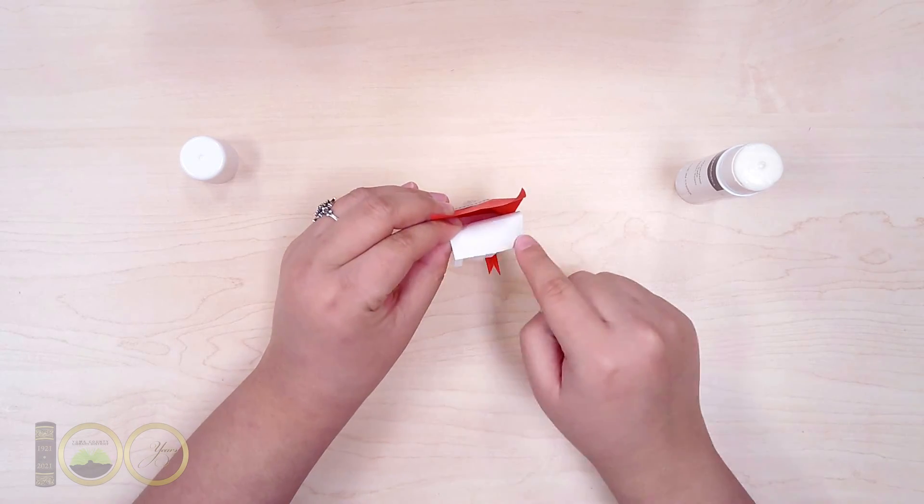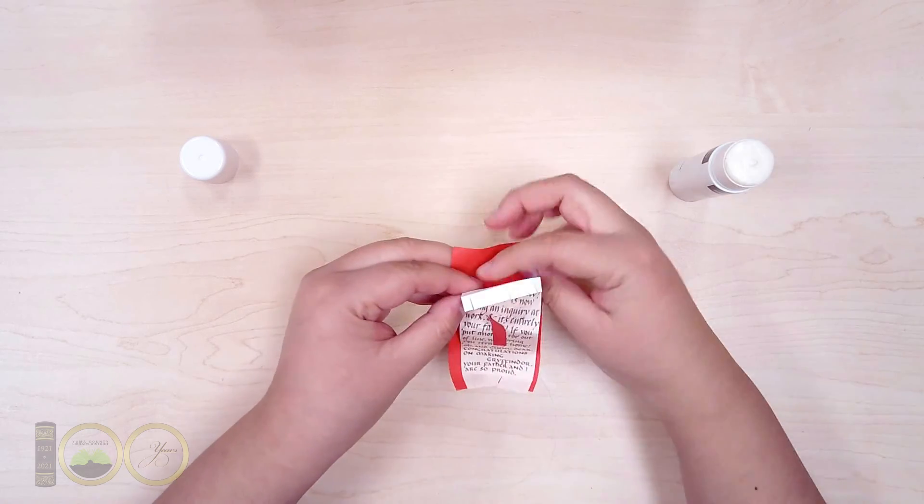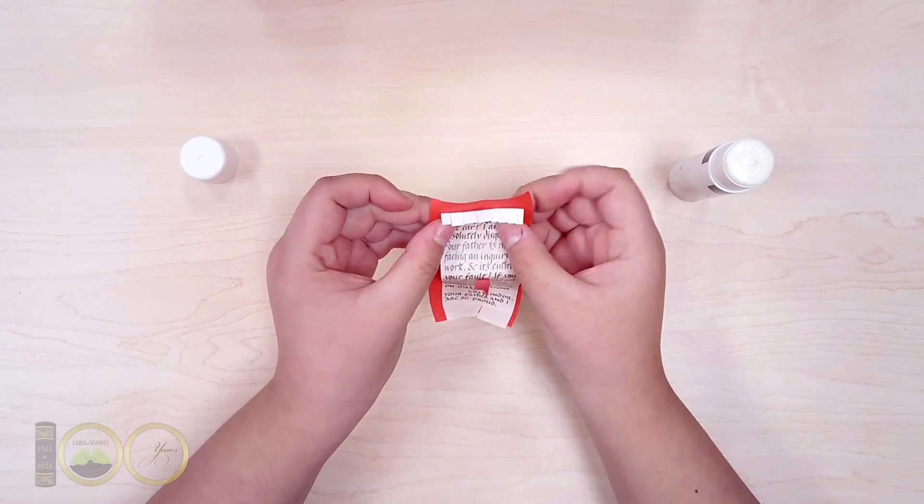Next, apply glue behind the crease of the top set of teeth and press it into place, about a quarter inch below the top of the red paper's edge.